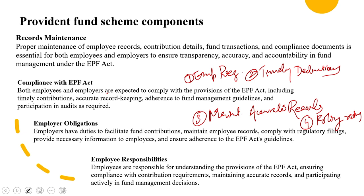Beyond core compliance, employers have additional obligations and broader responsibilities. Employers should raise awareness about the EPF scheme among their employees, familiarizing them with their rights and responsibilities. They can also assist employees in opening EPF accounts and accessing online portals for account management. Employers also need to provide employees with necessary documentation such as Form 16, which reflects the deducted EPF contribution during the financial year. This document is critical for employees to claim tax benefits under Section 80C of the Income Tax Act, as it gives details about all contributions and investments.